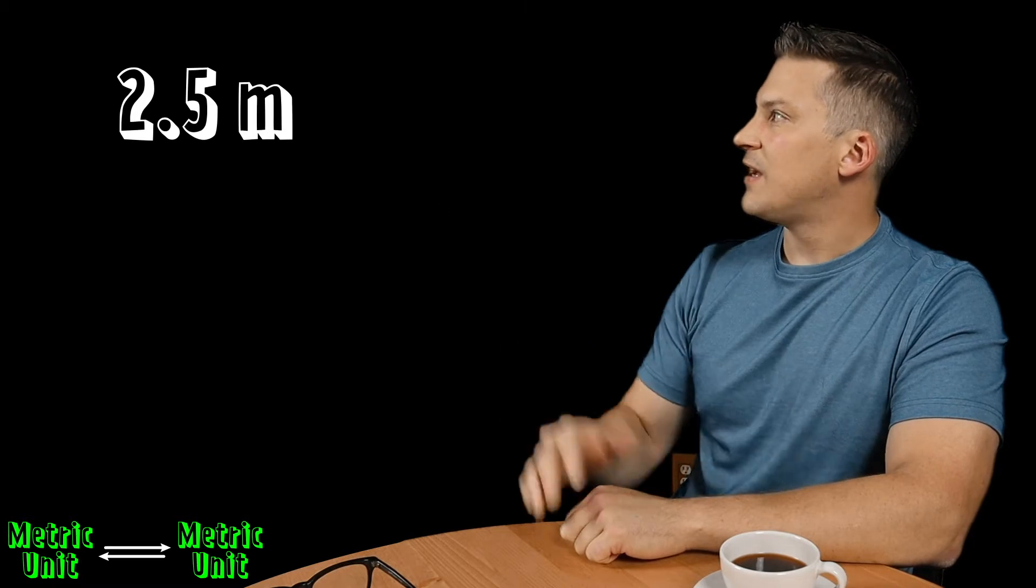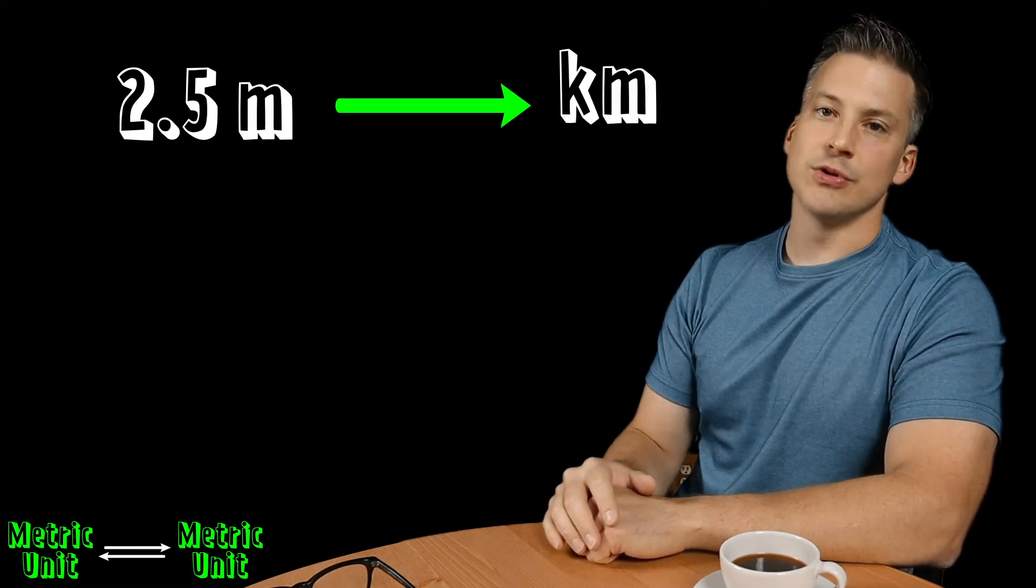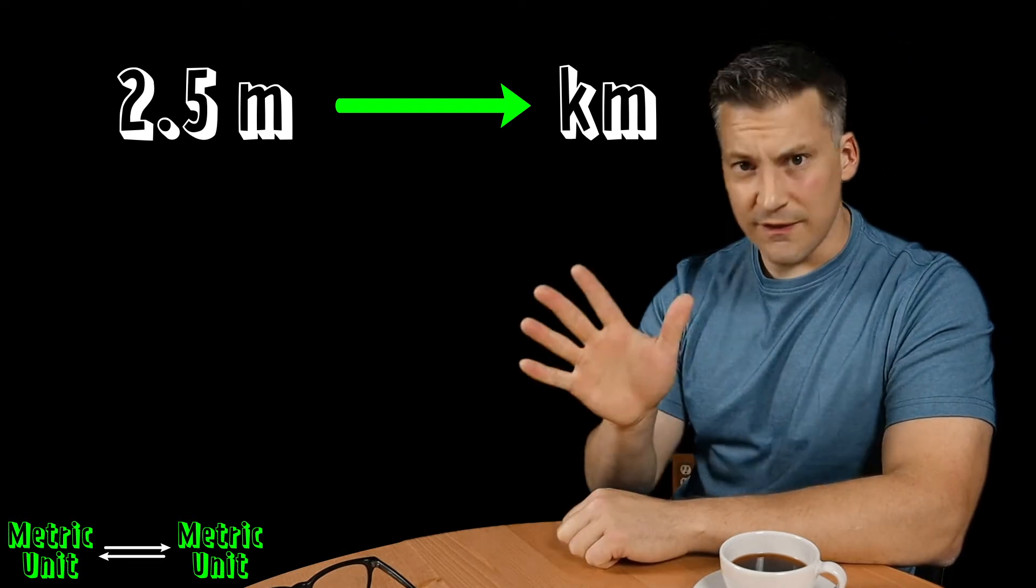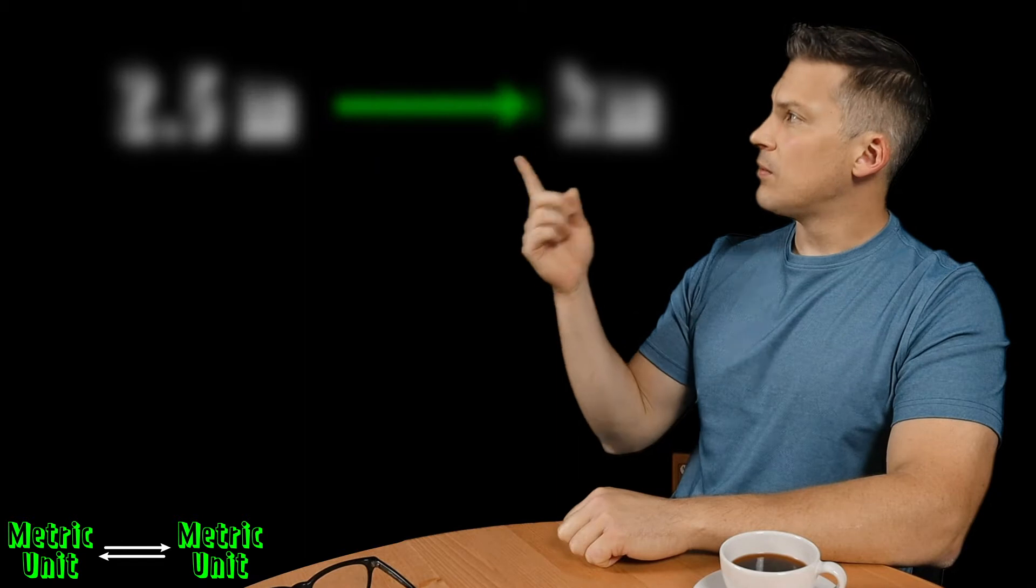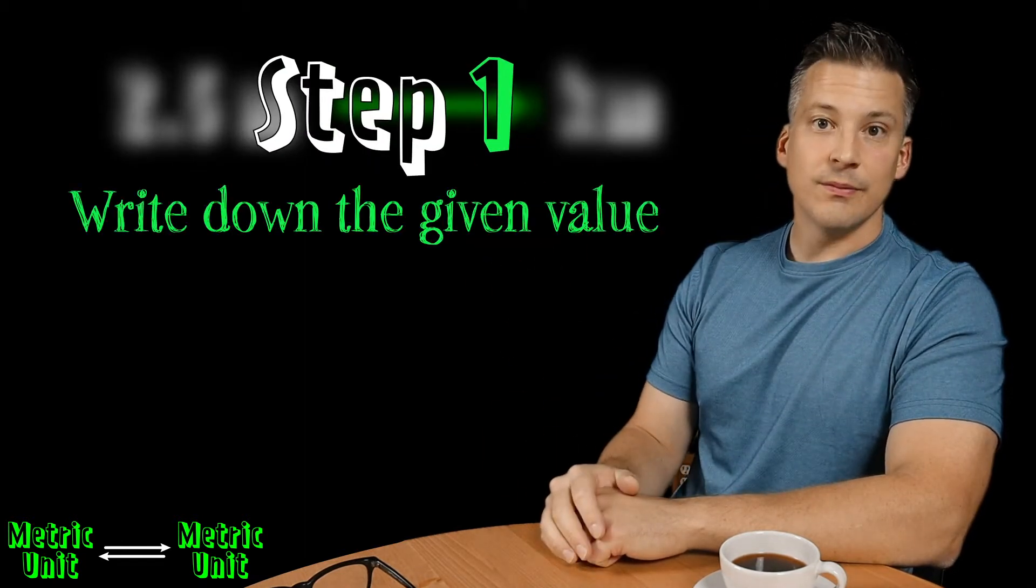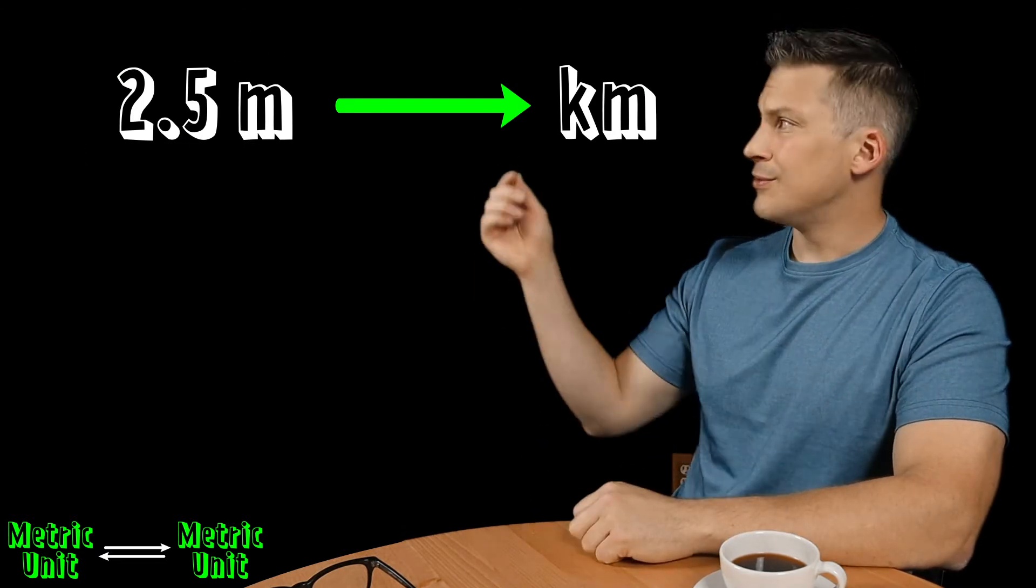Why don't we suppose we have 2.5 meters and we have to convert that into kilometers. So how do we do this? Well, I like to think about it in terms of a five-step process. Step number one is going to be to write down the given value. Now in this problem the given value was 2.5 meters, so we just write it down.